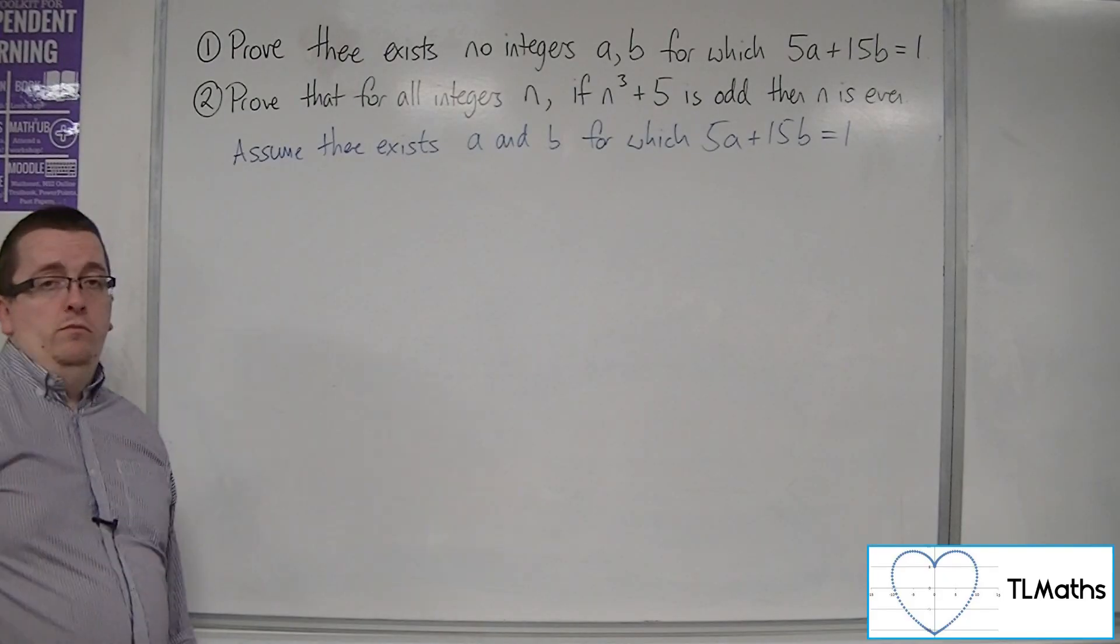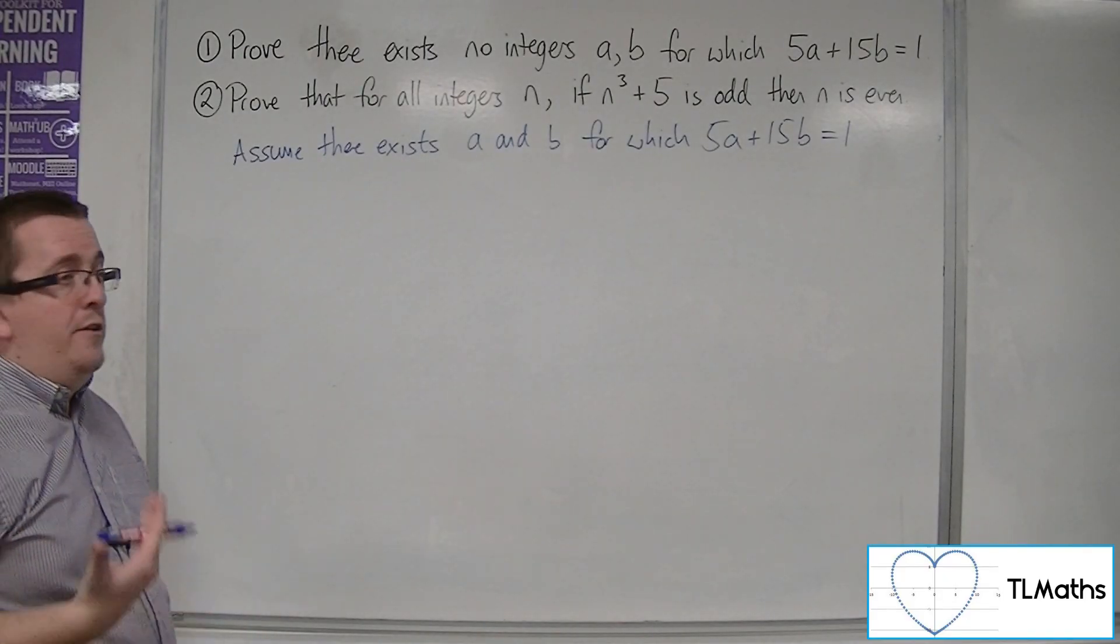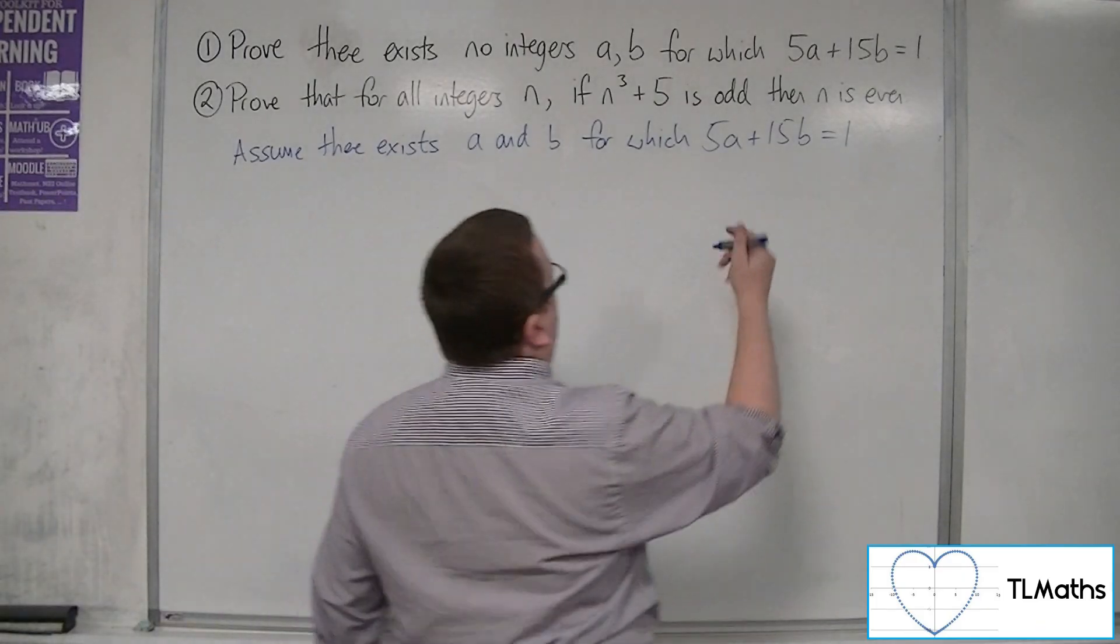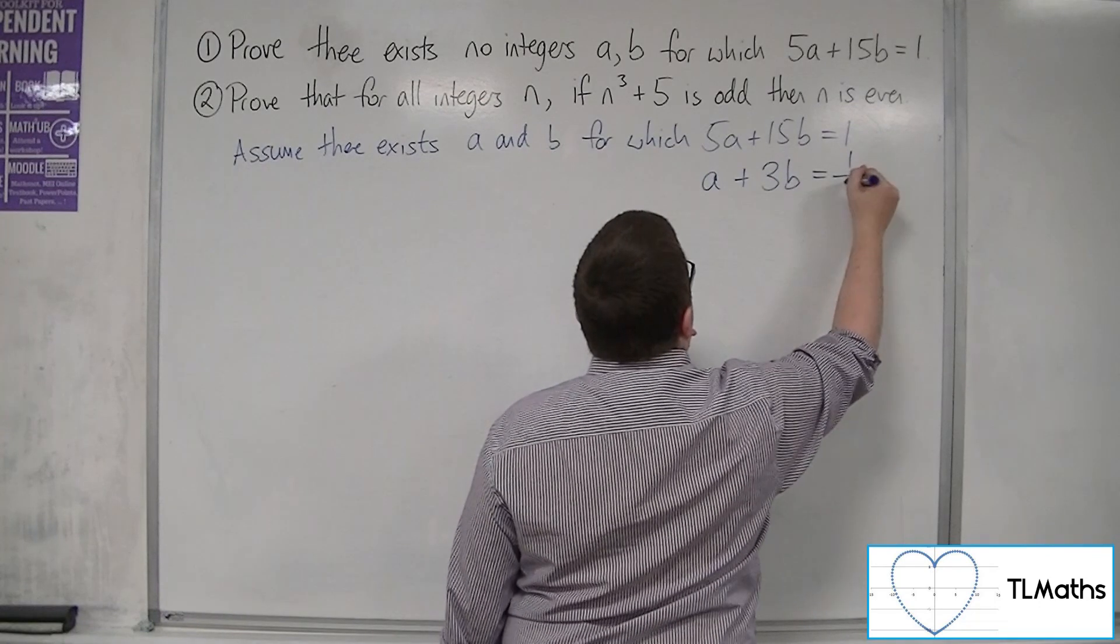Now if that's true then we could divide all the way through by 5. So we get a plus 3b is equal to 1 fifth.